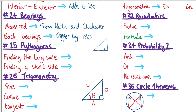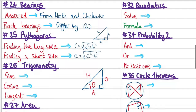Pythagoras' theorem. With a right-angle triangle, label the two short sides A and B and the long side C. To find the long side: C = √(A² + B²). To find a short side: A = √(C² − B²).